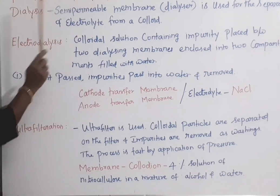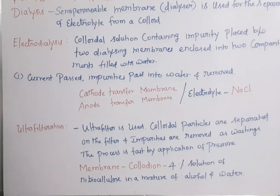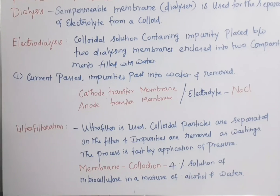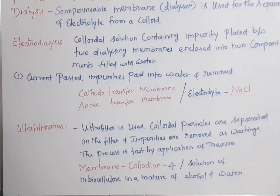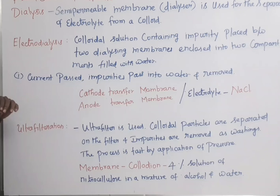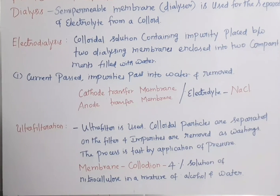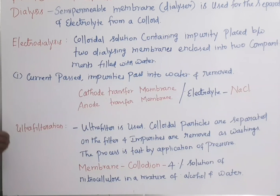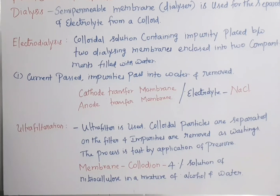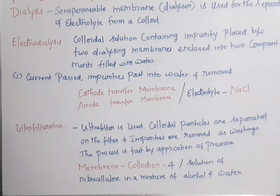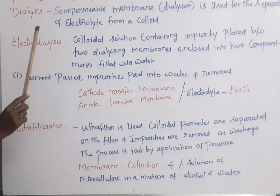Purification of colloids. The colloidal solution is already prepared using some techniques, but it contains some impurities. If the impurities are not removed, the solution becomes destabilized and gets precipitated. So we have to remove the impurities to stabilize it. These impurities are present as electrolytes. The methods used for purification of colloids are: first, dialysis; second, electrodialysis; third, ultrafiltration.